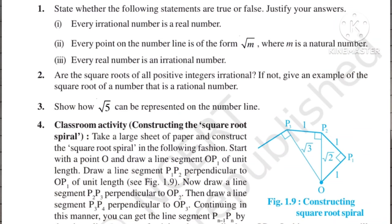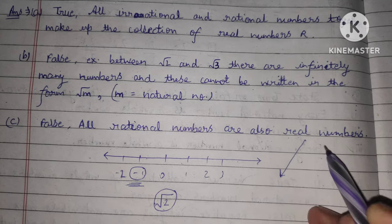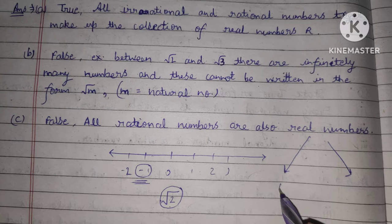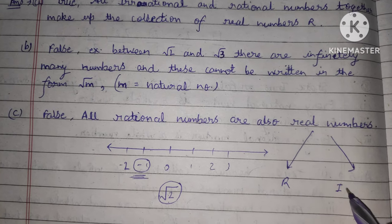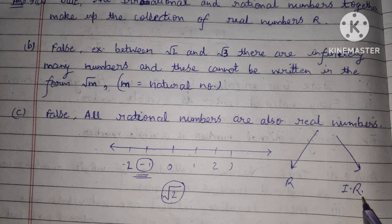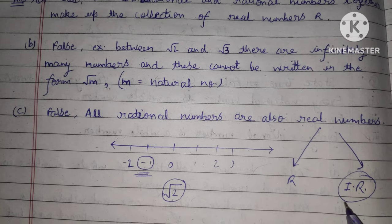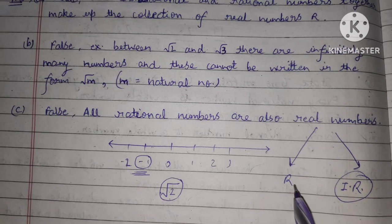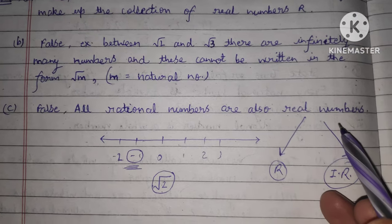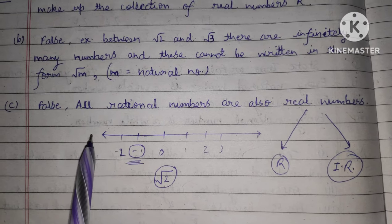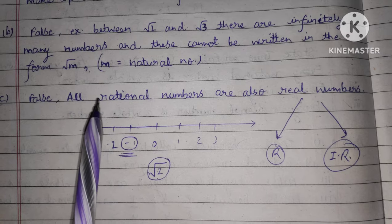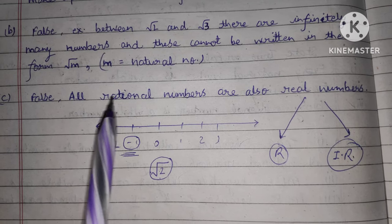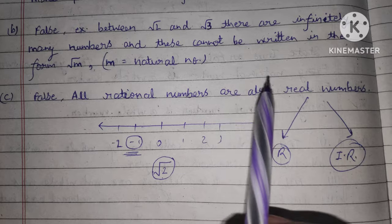The third statement is: every real number is an irrational number. Is every real number irrational? No, this is false. Real numbers are of two types: rational numbers and irrational numbers. So every real number is not an irrational number, because all rational numbers are also real numbers.